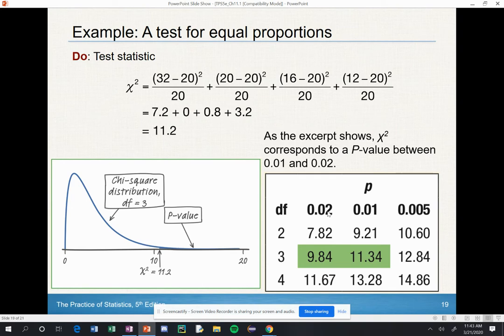That's the value I got, and that makes sense because table C is saying it's somewhere between one and two percent with degrees of freedom three. And what are these green values?